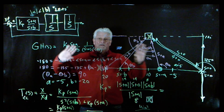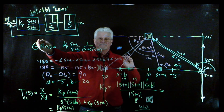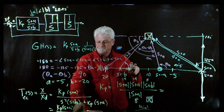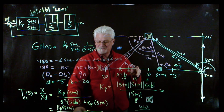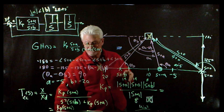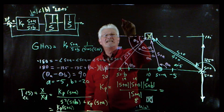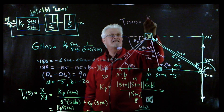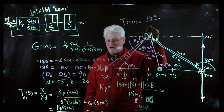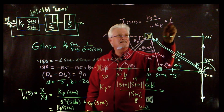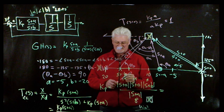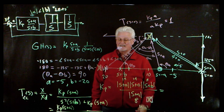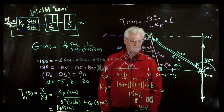So now we know how to do a lead controller. One last thing to note for this type two system: the steady state gain T(s) evaluated at s equals zero is Kp times a divided by a times Kp, which equals one. So for a type two system the steady state gain is still one. We can look at other system types another time.